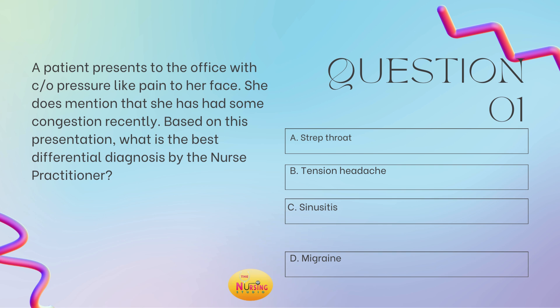The stem states: based on this presentation, what is the best differential diagnosis by the nurse practitioner? You need to look at the assessment findings — the subjective complaints and objective findings. Here, the patient comes in complaining of pressure-like pain to her face and mentions recent congestion. That pressure-like pain on the face is classic for sinusitis — sinuses being clogged, inflamed, tender to touch. So C, sinusitis, is your best answer.